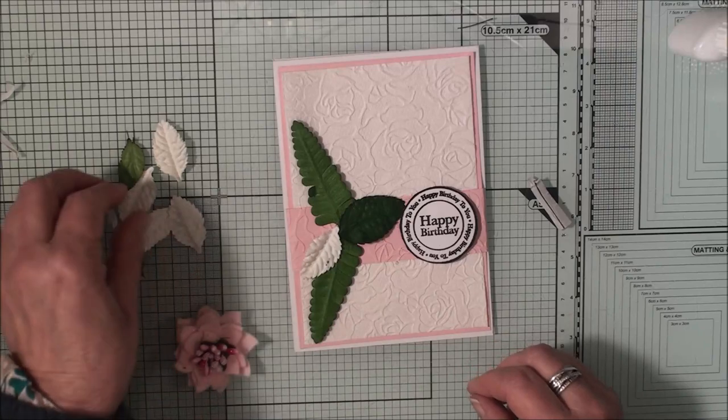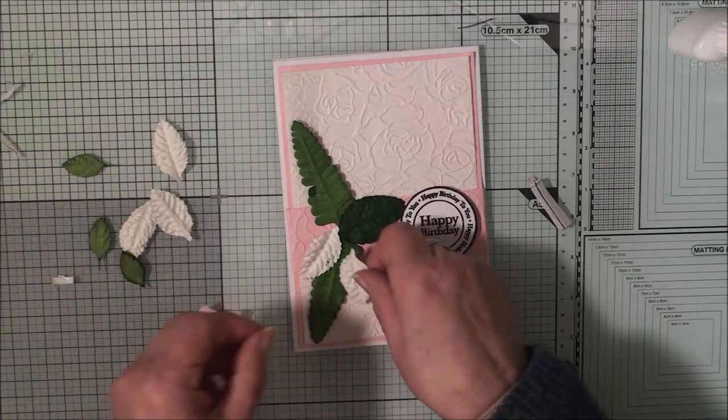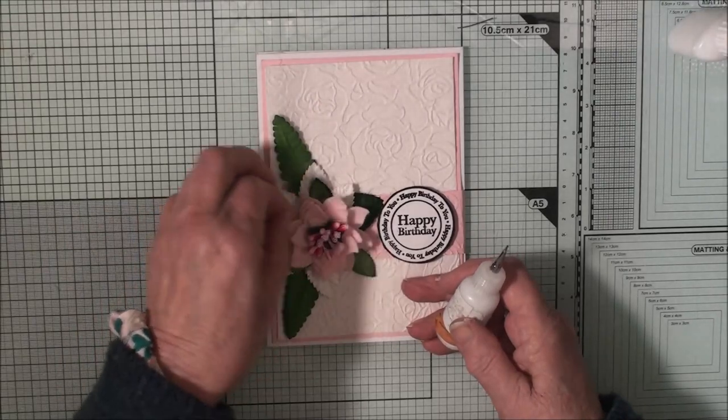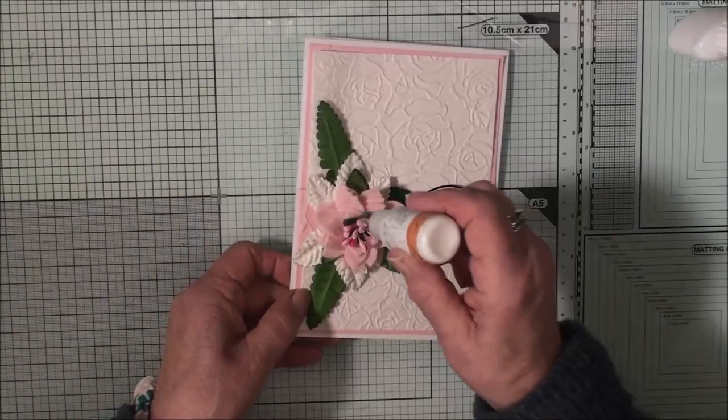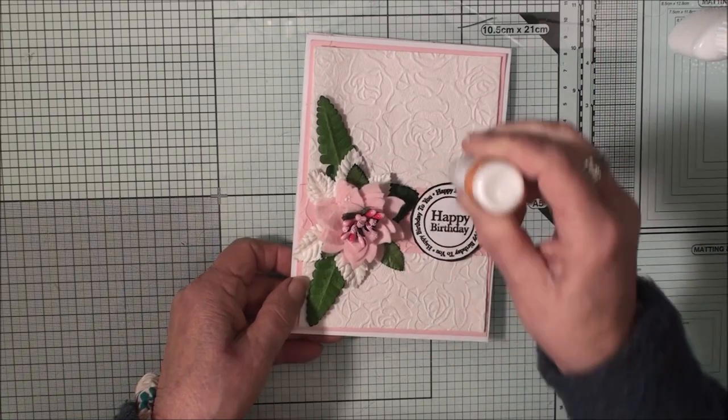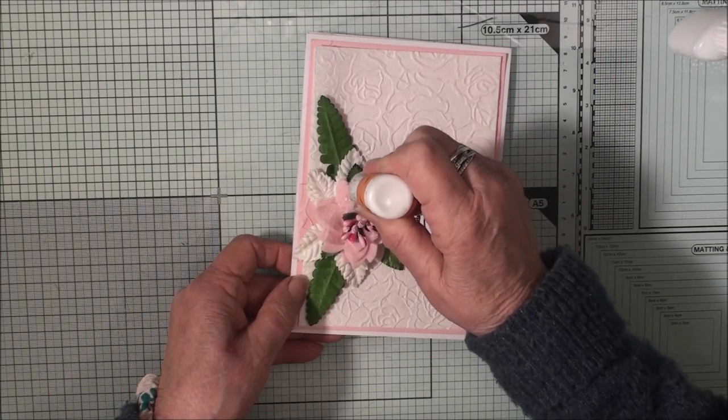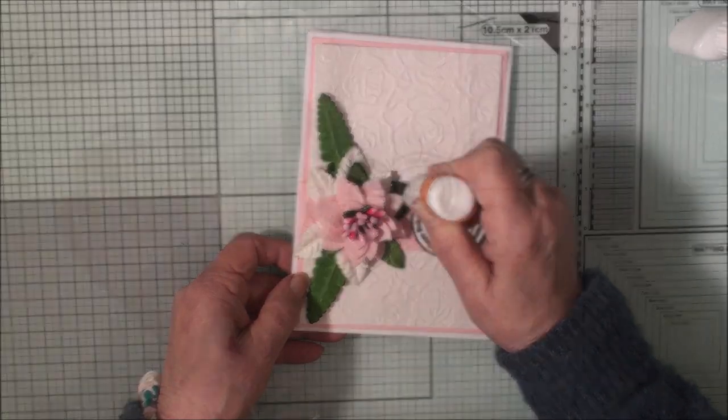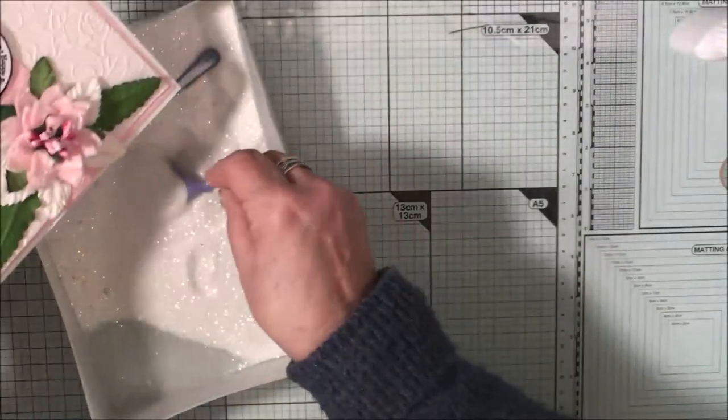So now with some hot glue, I'm going to put these in along the sides, and now just to add a little bit of sparkle to the felt petals, I'm just going to add some glue just along the edges and we'll just sprinkle some glitter on the top.